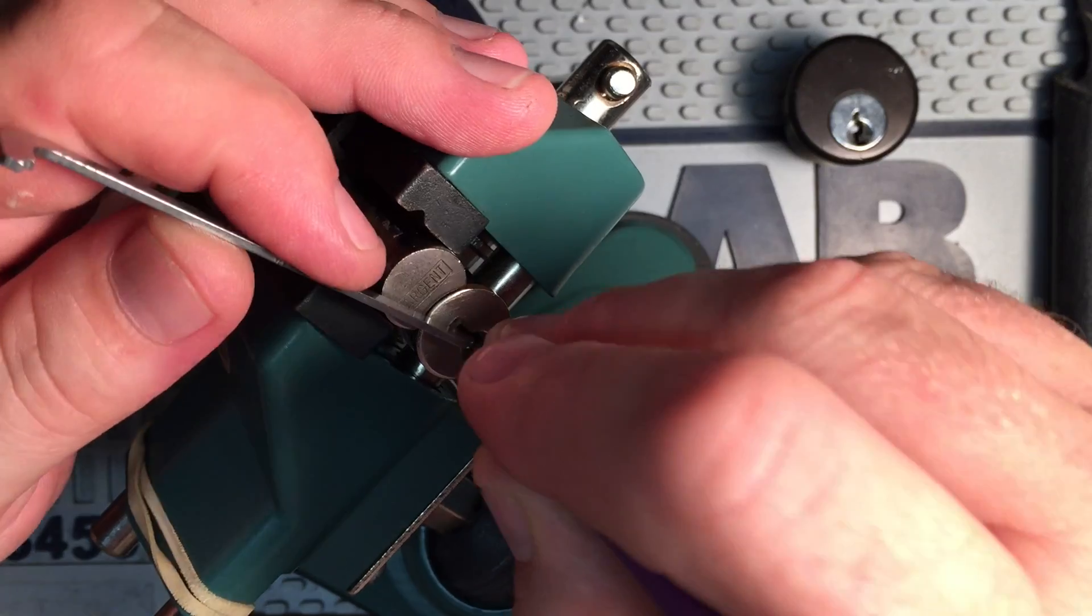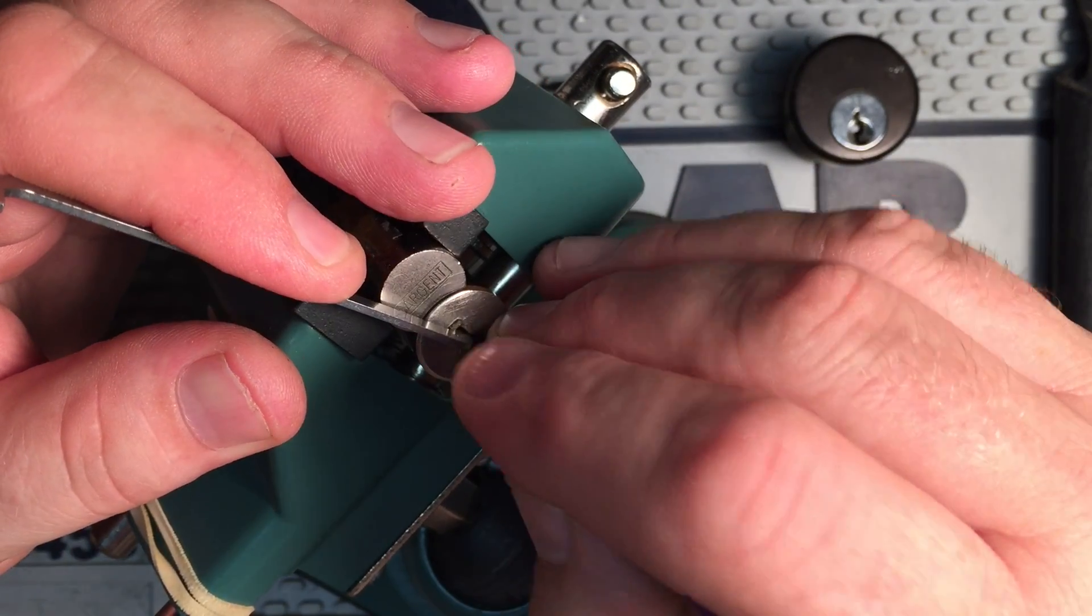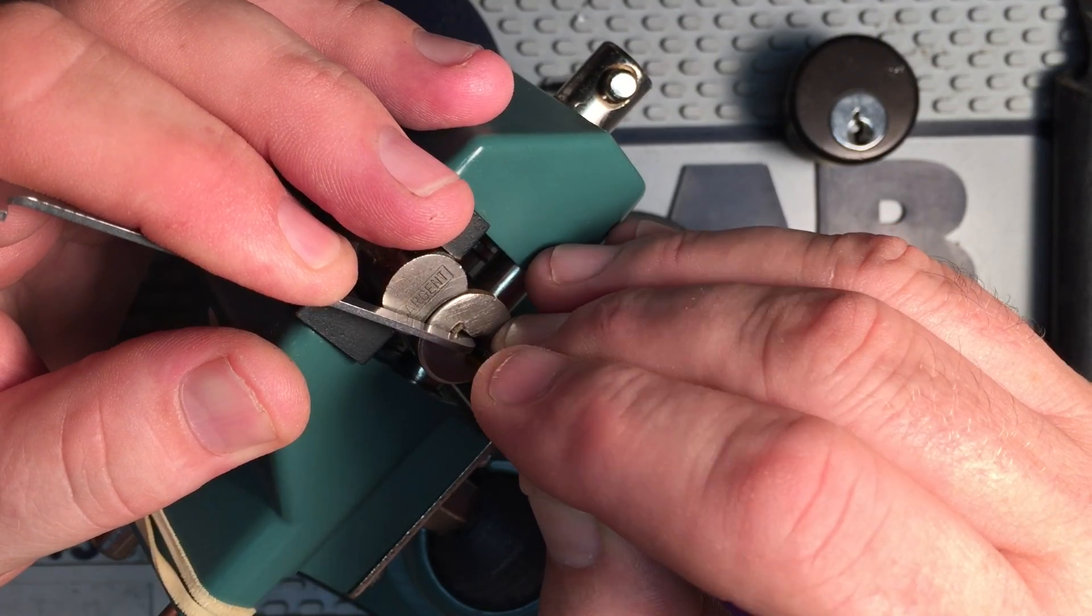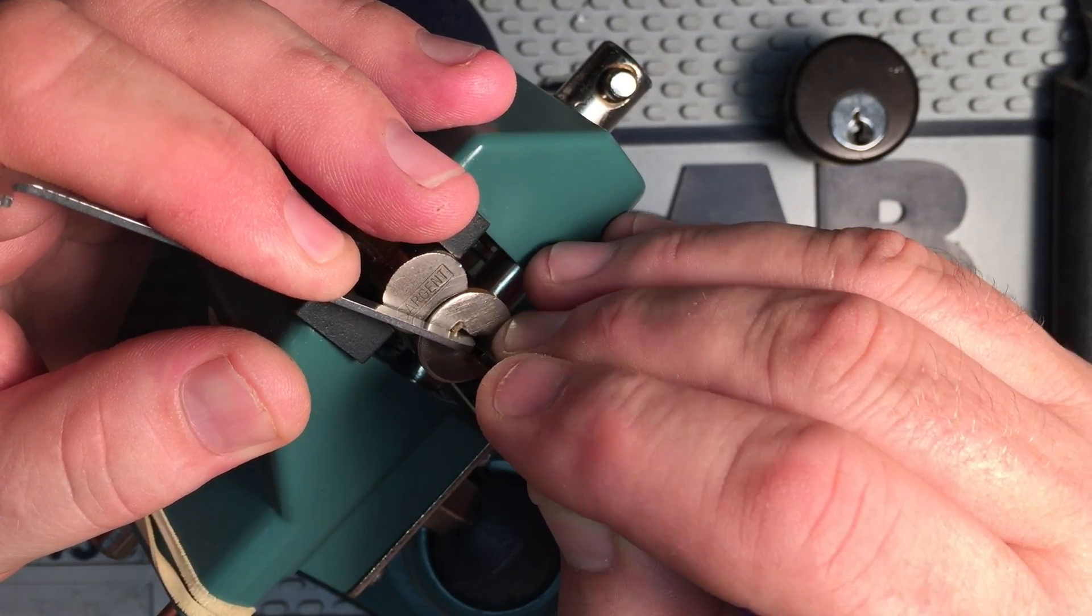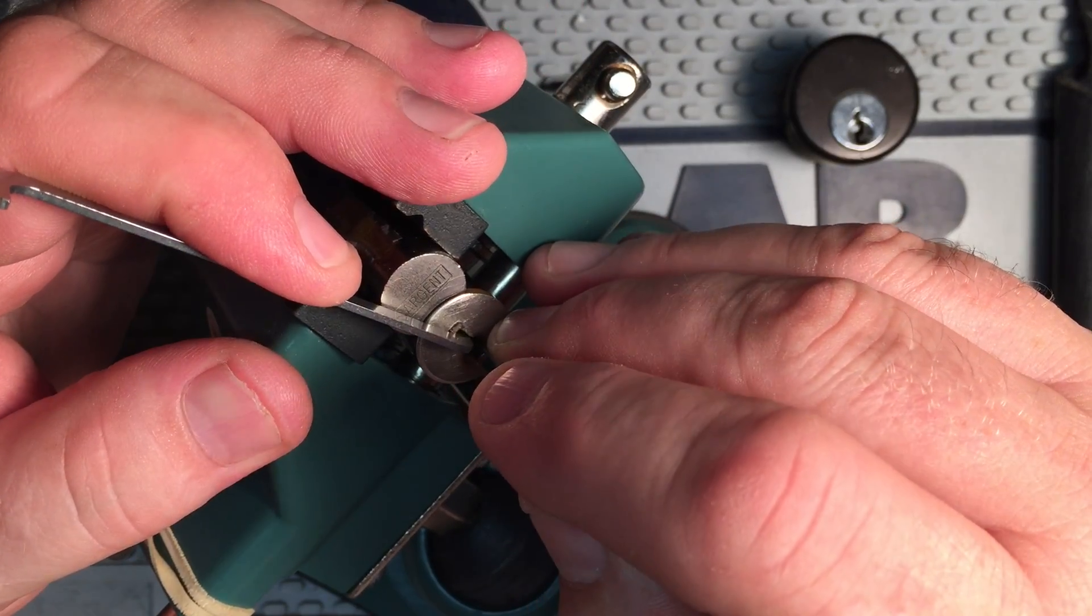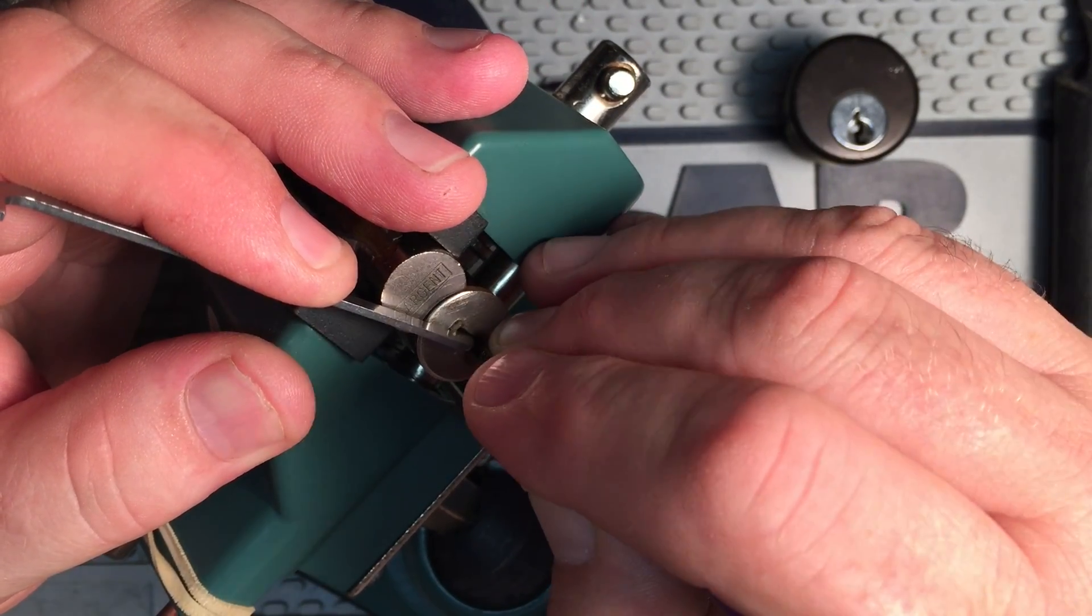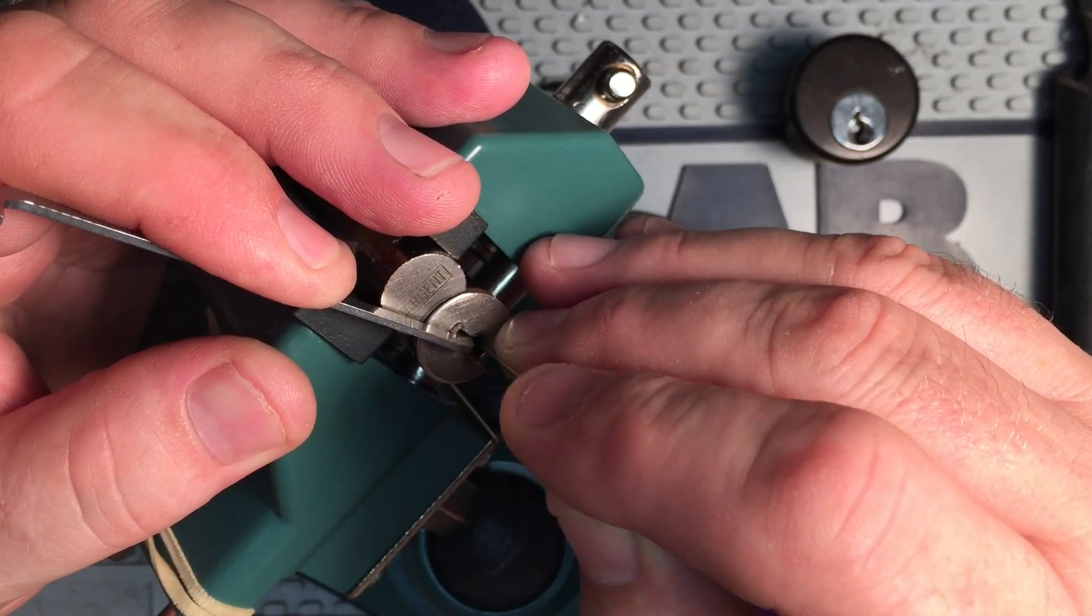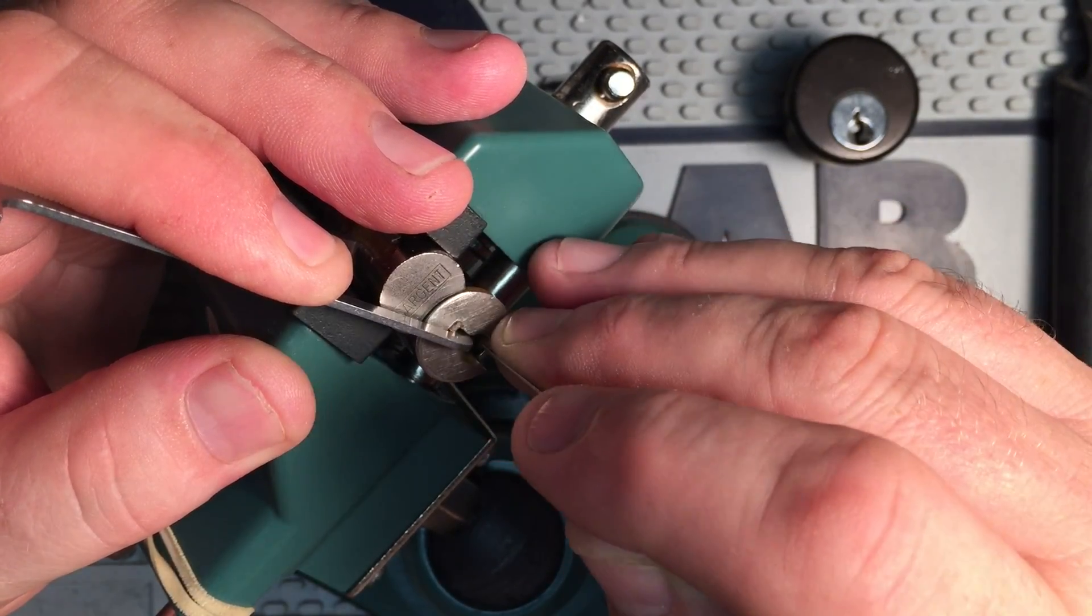And again, picking pin four got me to favor the control shear line. Picking pin six tends to get this lock to favor the operating shear line. So I'm going to start on the way back. And again, lots of tension.